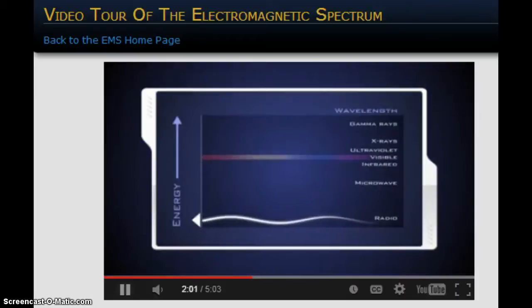Long EM waves, such as radio waves, have the lowest frequency and carry less energy. Adding energy increases the frequency of the wave and makes the wavelength shorter. Gamma rays are the shortest, highest energy waves in the spectrum.